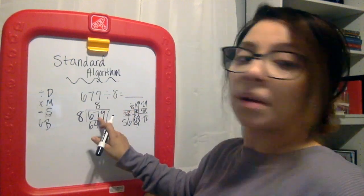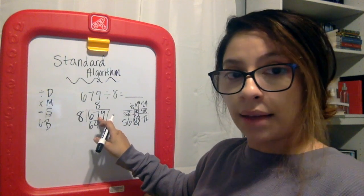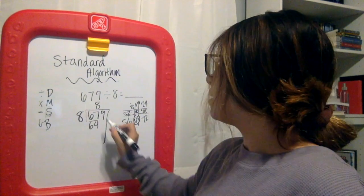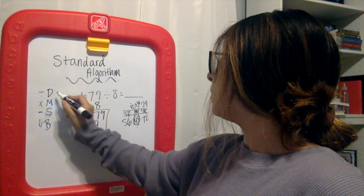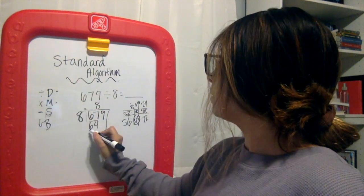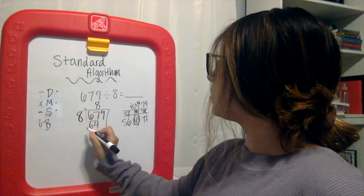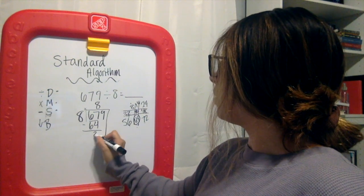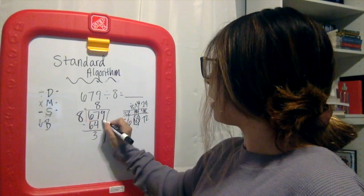So you can write 64 down, but how many times are you multiplying to get to 64? Hopefully we're saying one, two, three, four, five, six, seven, eight. And your 8 goes above that 7 because you're talking about 67, not just the 6. So 8 times 8, we are divided, now we're multiplying. We said 64. Now we subtract, we're left with 3, and then we bring down our 9.